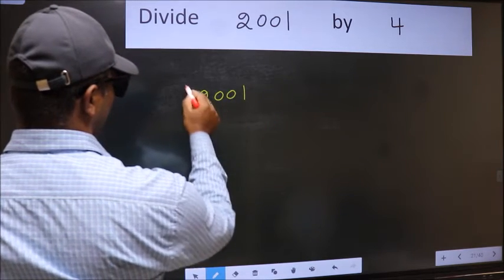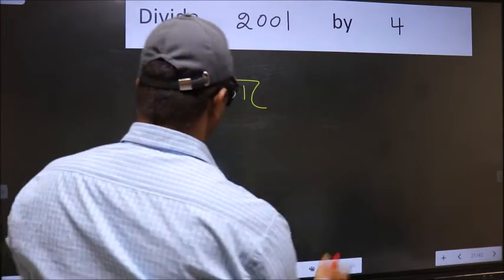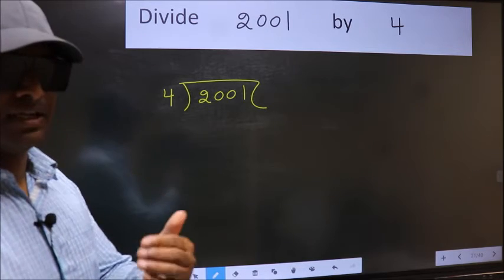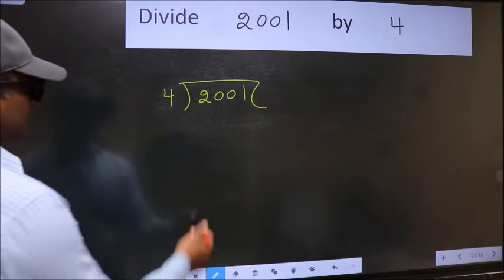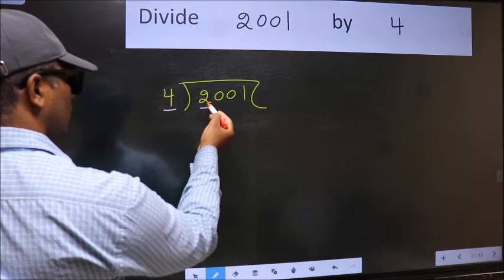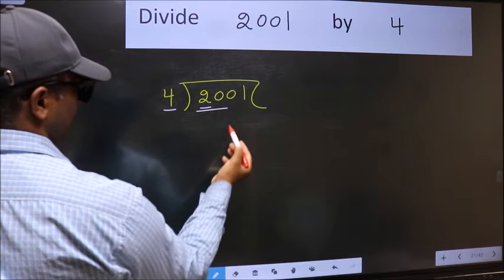2001 and 4 here. This is your step 1. Next, here we have 2 and here 4. 2 is smaller than 4. So we should take 2 numbers, 20.